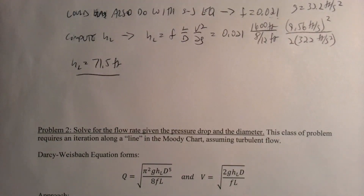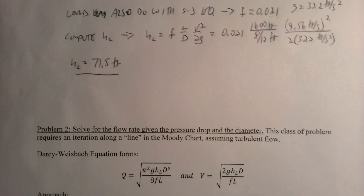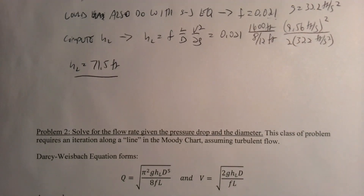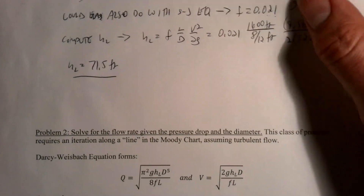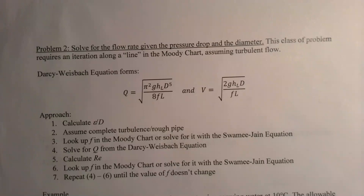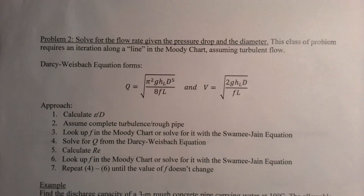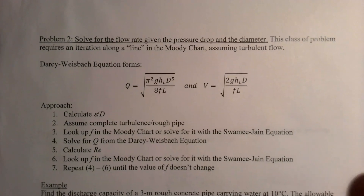We are back here talking about solving for engineering design properties of a pipe system for a given fluid. In the last video, I gave an overview of the different variables we were thinking about in these kinds of problems. That includes the fluid properties — the density and viscosity — and then the pipe properties, which is the material. The other things that vary from one problem to another are the diameter, the flow rate, and the head loss that happens in the pipe due to friction.